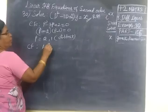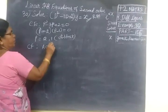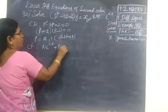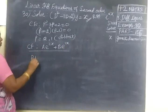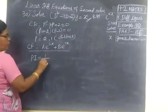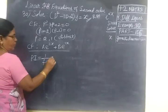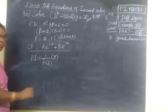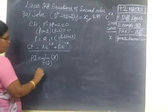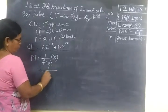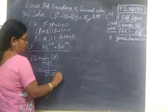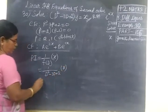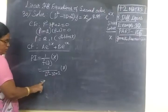A e power P1x plus B e power P2x. Next we find particular integral. So 1 by f of D. Right hand side we have x. Now write 1 by f of D: 1 by D squared minus 3D plus 2 of x equal to...